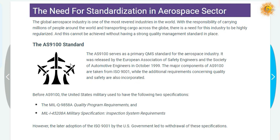Before AS9100, the United States military used to have two specifications: the MIL-Q-9858A Quality Program Requirements and MIL-I-45208A Military Specification Inspection System Requirements. However, the later adoption of ISO 9001 by the US government led to the withdrawal of these specifications.